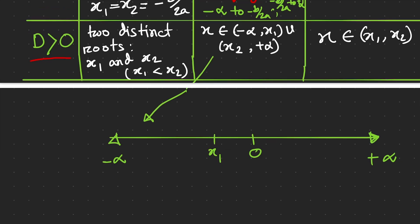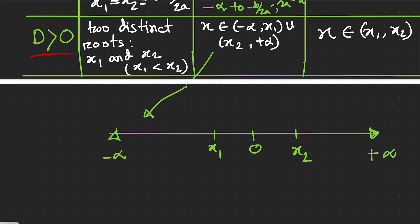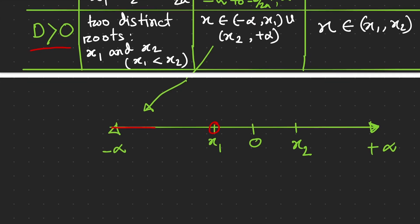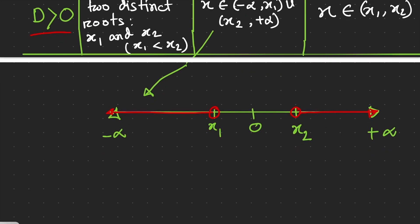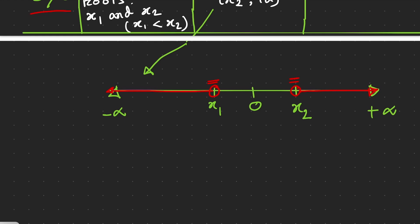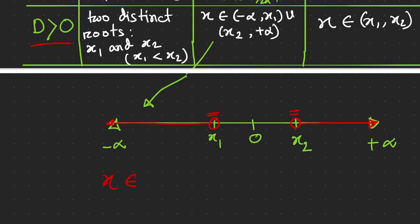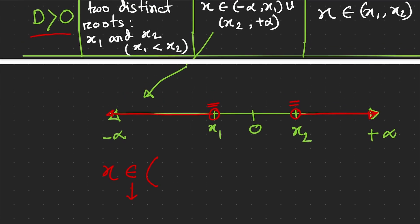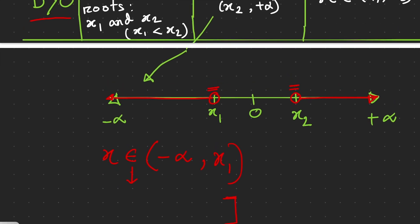Let me draw this on a one-dimensional graph. This is negative infinity on the left and positive infinity on the right. Let's say x₁ is a negative number, for example −1 or −5, and x₂ is a positive number — we don't know unless we solve the quadratic equation. The solution for x is from negative infinity to x₁, and from x₂ to positive infinity. Since x₁ and x₂ are not included, we draw open circles. We use round brackets (parentheses) because the endpoints are open.